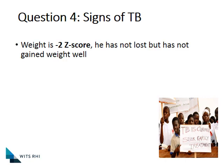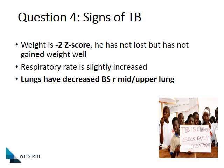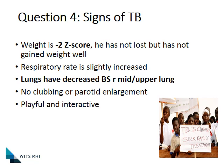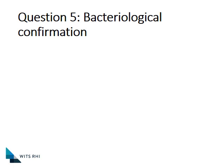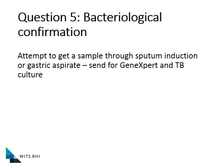Question four — signs: we plot the weights and find a Z-score of minus two. The child has not lost weight but is certainly not gaining any. There is a slightly increased respiratory rate and decreased sounds in the upper lung, but no clubbing or parotid enlargement, and the child is relatively playful and interactive. In this scenario it is very important to do an X-ray to look for hilar lymphadenopathy as possible evidence of TB. The X-ray shows moderate hilar lymphadenopathy, but nothing else specifically standing out. Although symptoms are very suspicious and we have the X-ray, we still try to find bacteriological confirmation — a sputum induction or gastric aspirate can be attempted on a five-year-old and sent for GeneXpert and TB culture. The GeneXpert comes back negative, which is not surprising in hilar TB.